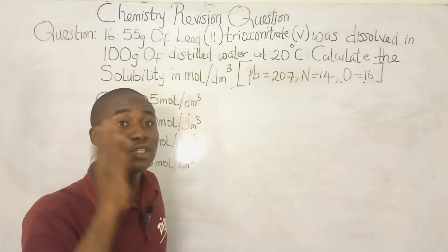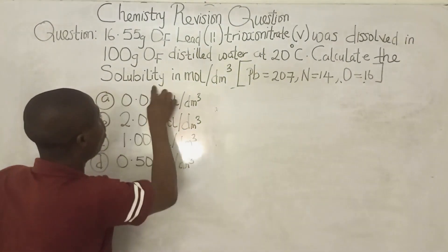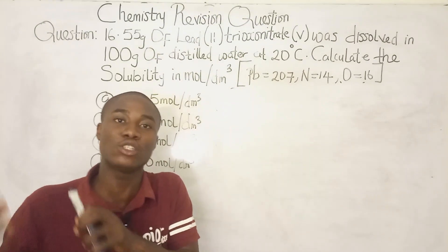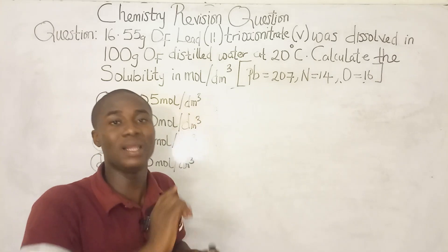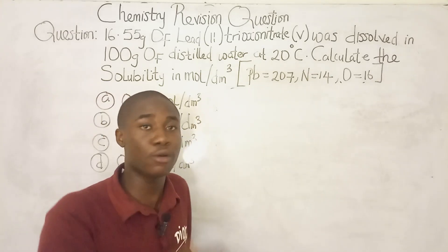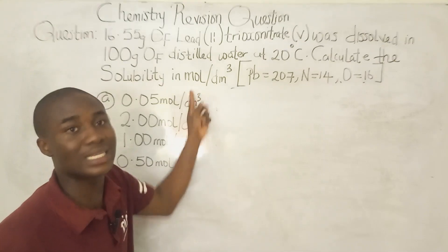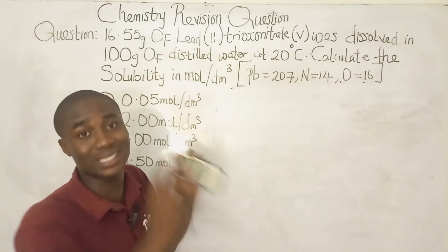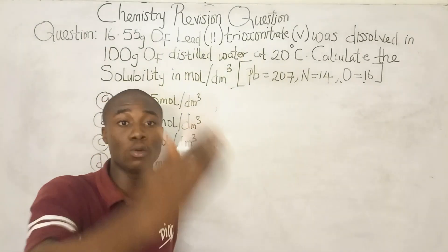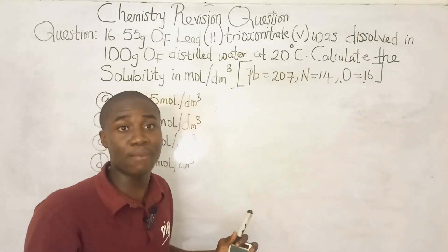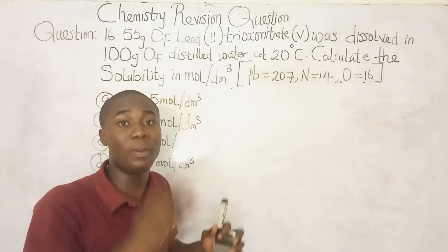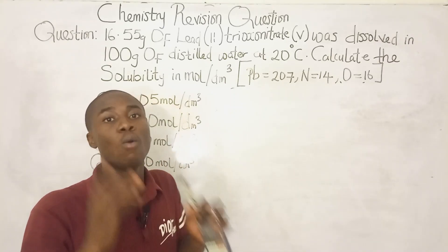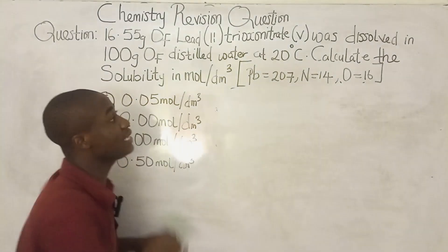This question is from the topic of solubility. Solubility is a concentration unit and can be expressed in various forms: in moles per dm³, as stated by this question; in grams per dm³; and also in grams per 100 grams of water.